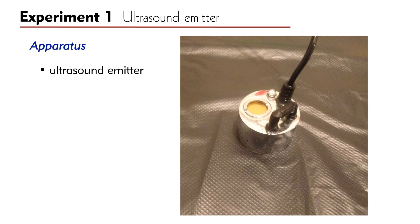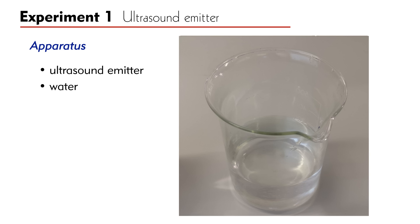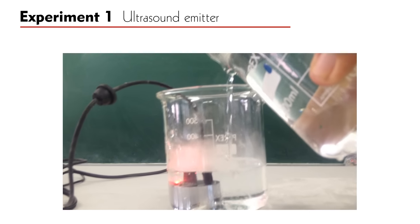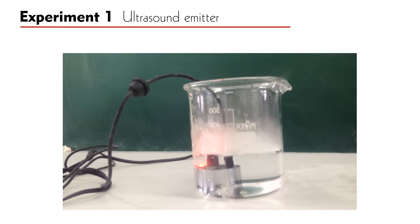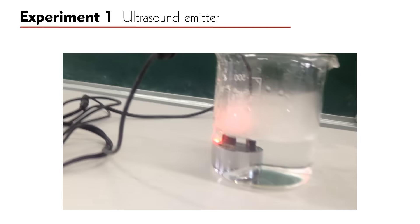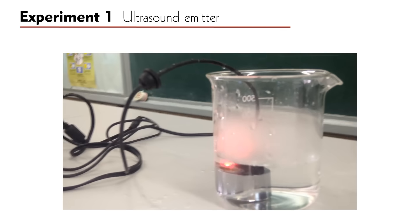The apparatus used includes an ultrasound emitter and a glass of water. When the ultrasound emitter is immersed into the water and turned on, mists are formed. Note that the water is not boiling and no water vapor is produced. The mists are simply tiny water drops produced by the vibration of the ultrasound emitter.